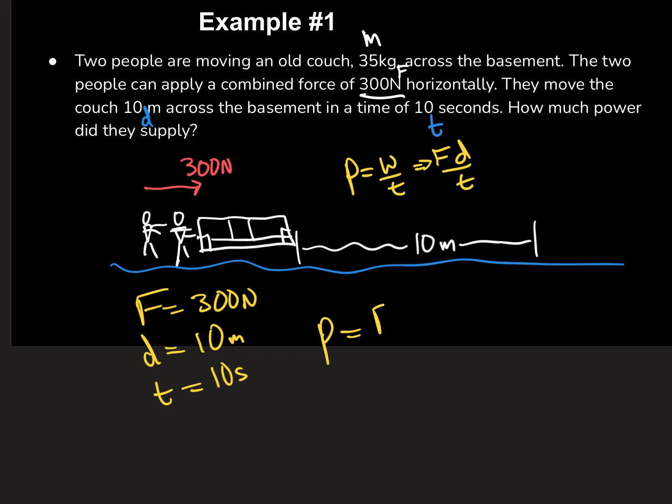So power, in this case, will just be force times distance over time. So that's 300 times 10 divided by 10. So we see that we get 300 watts. So these people produce 300 watts of power pushing this couch across. So if you were to somehow harness that power, you could power a couple TVs for that time period. Pretty cool.